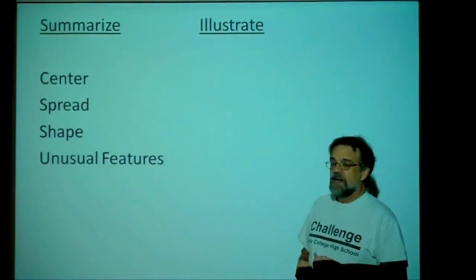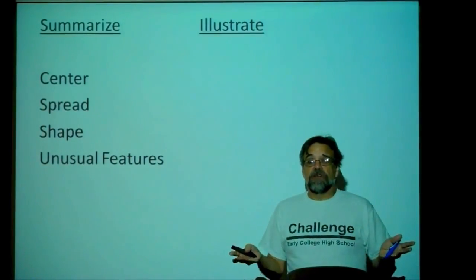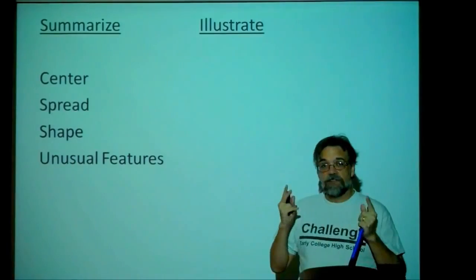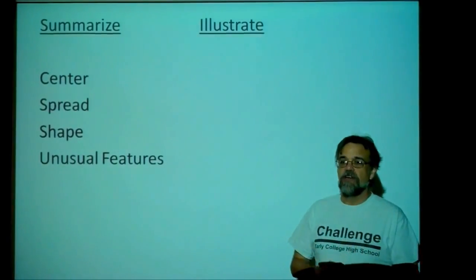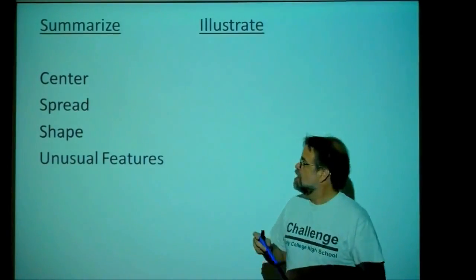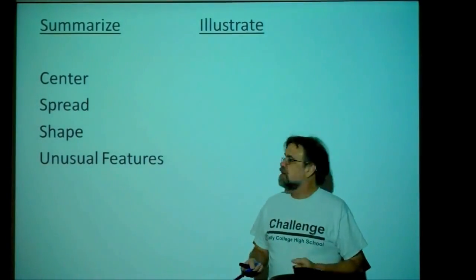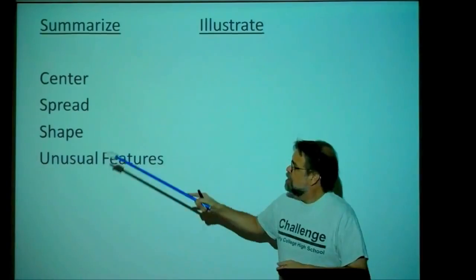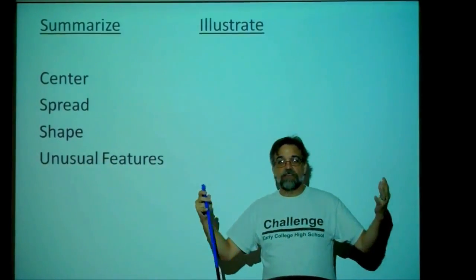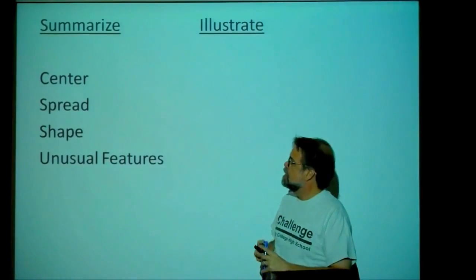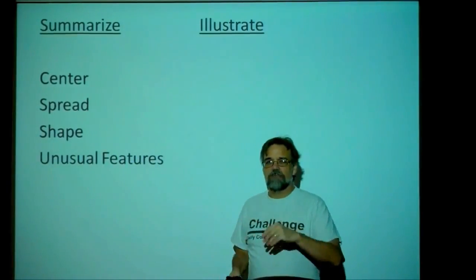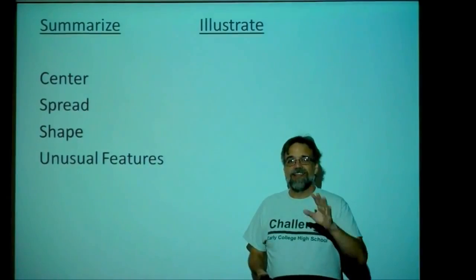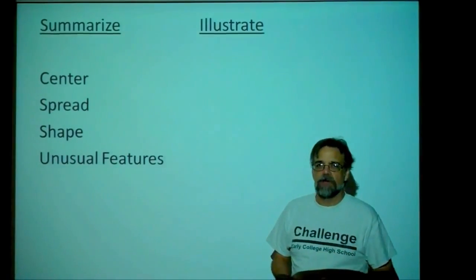So first let's look at summarizing. With categorical data, there wasn't much to the summary — it was basically what percentage falls in each category. With quantitative data, there's actually a lot more to look at, because now we have numerical values. We can ask: where's the center of the values, meaning the average? What's the spread — are they spread way out, or all bunched around a single value? And we'll look at shape and unusual features too.